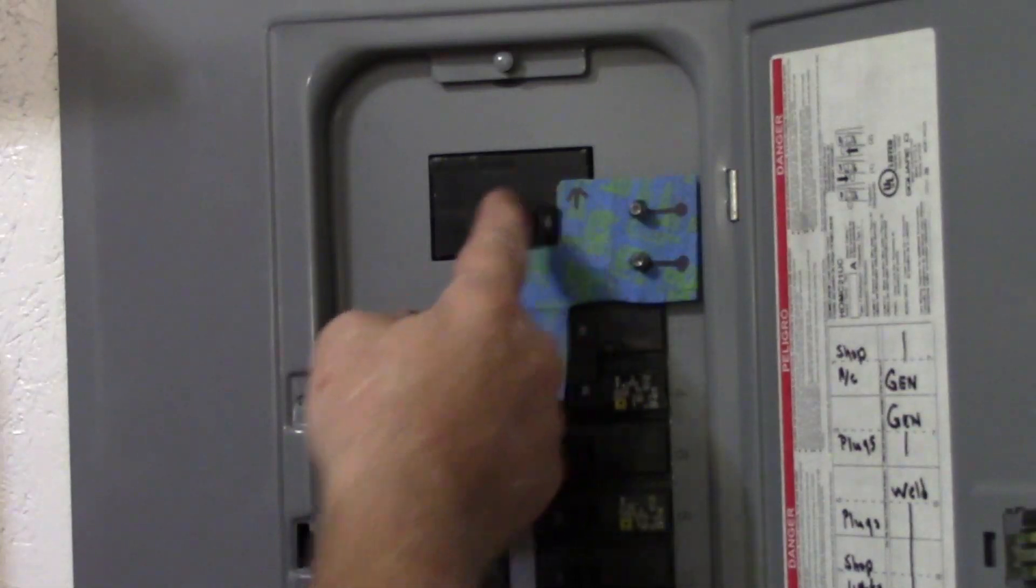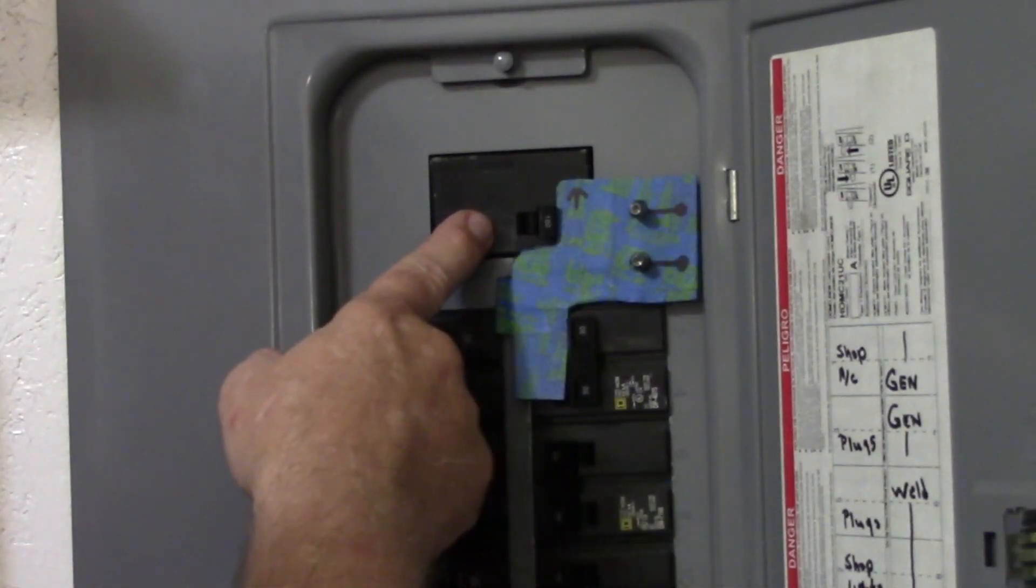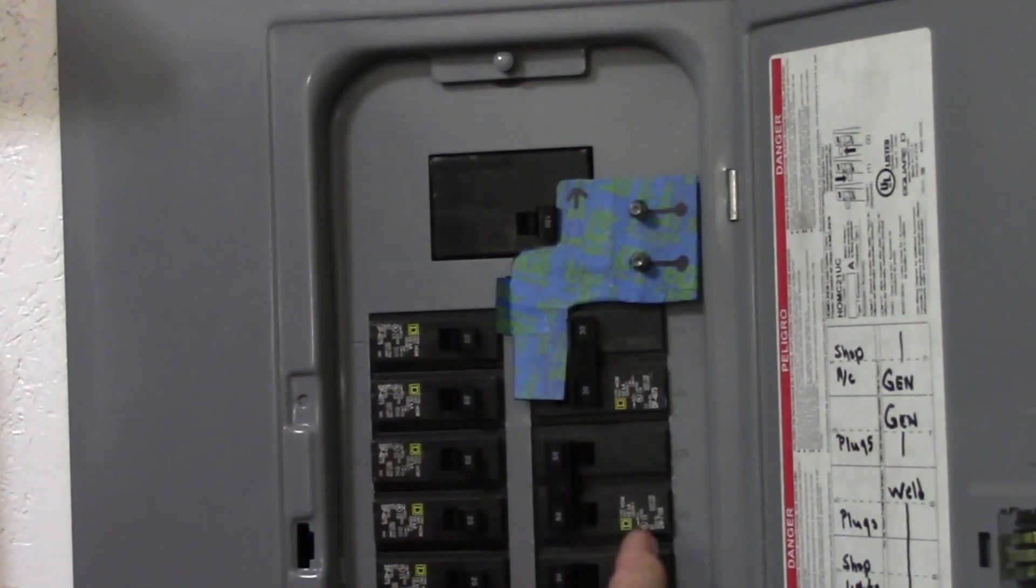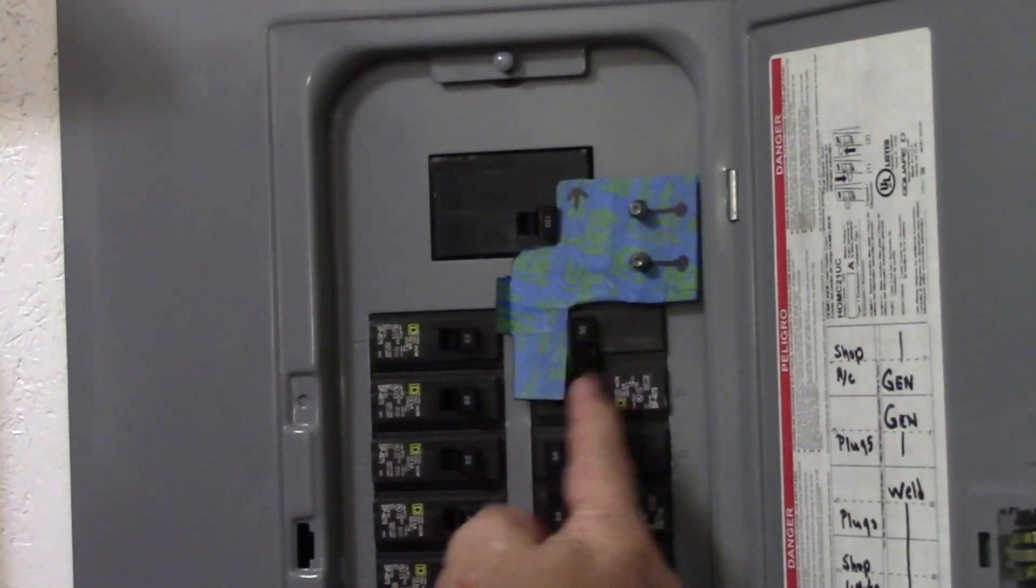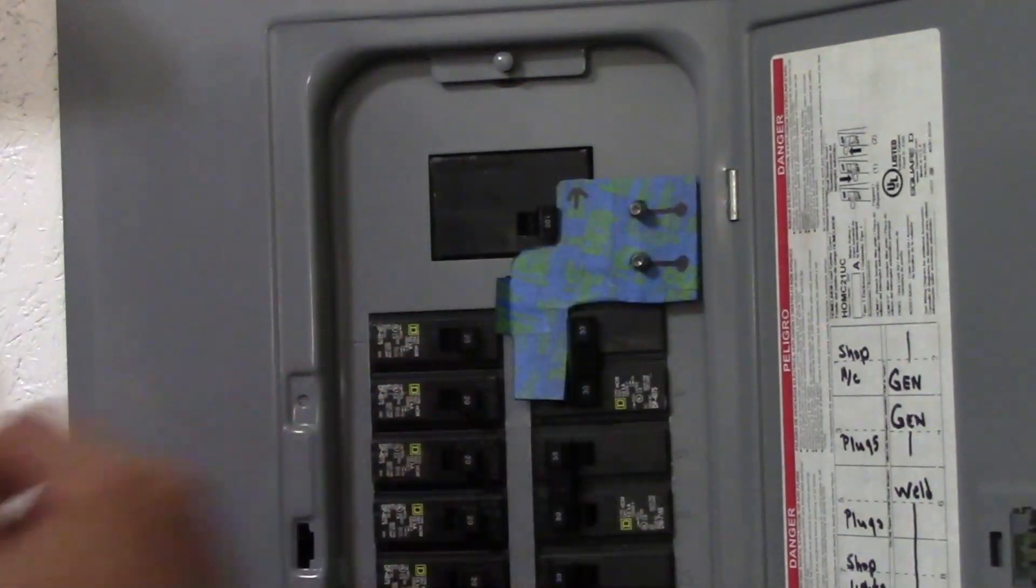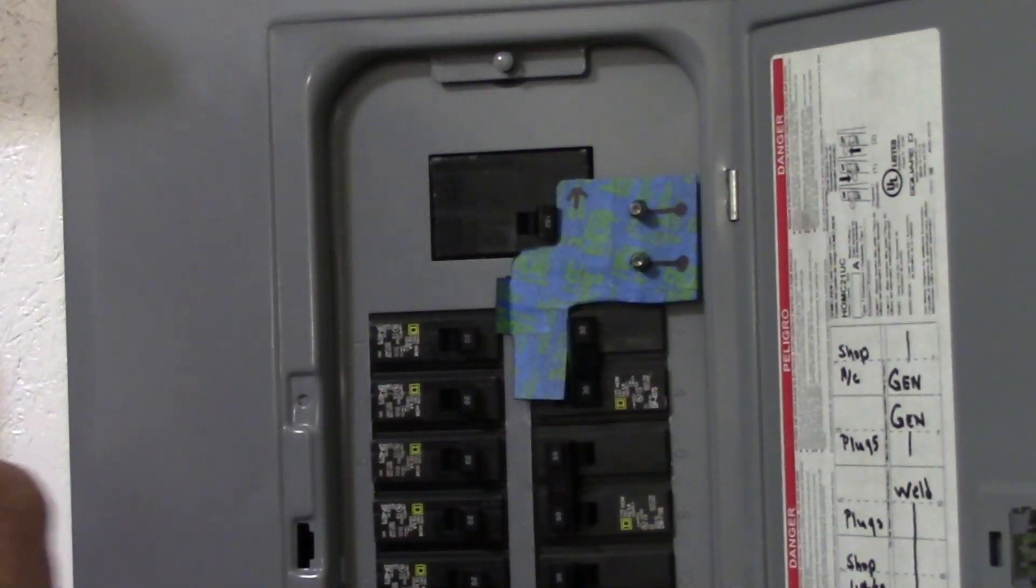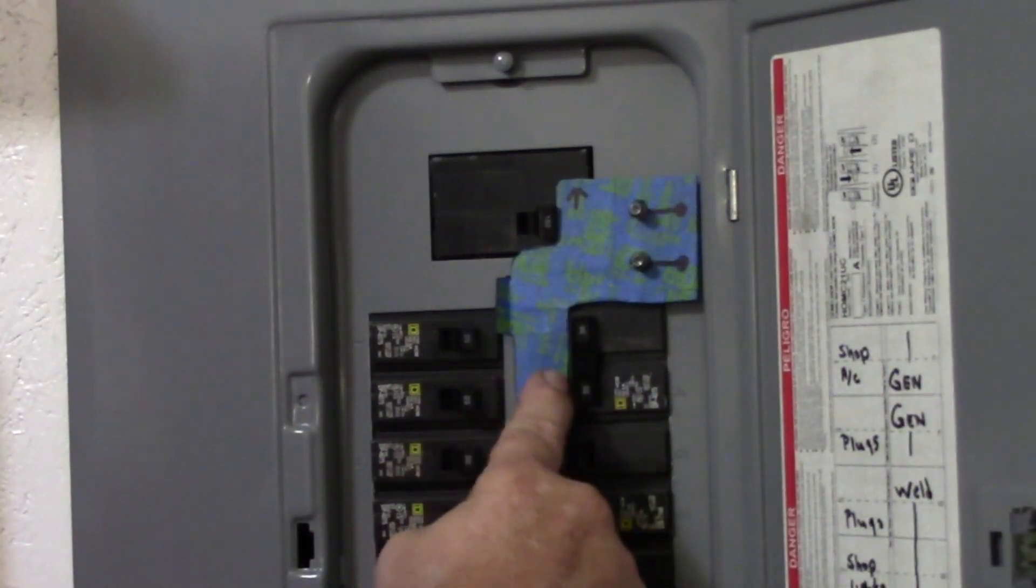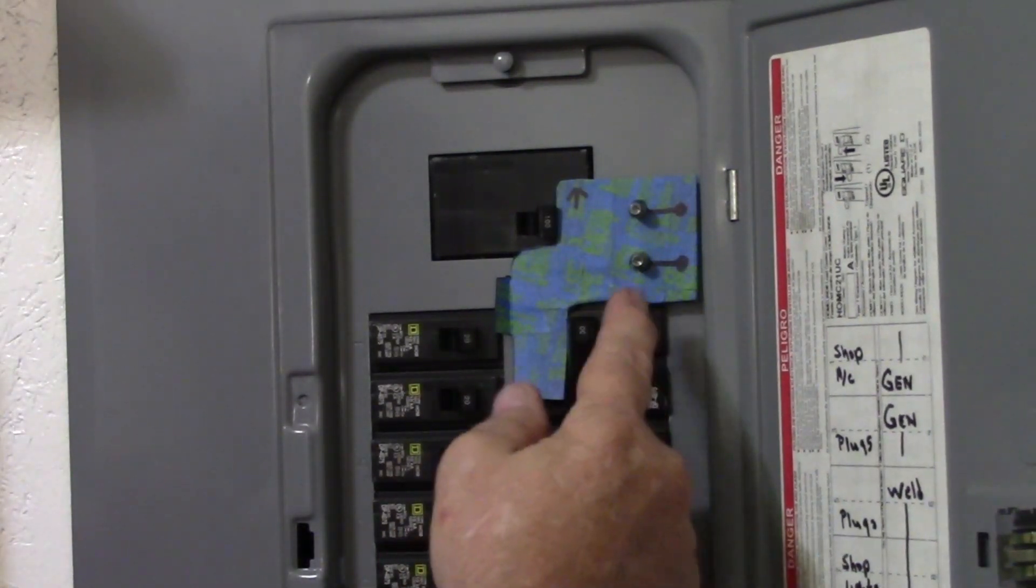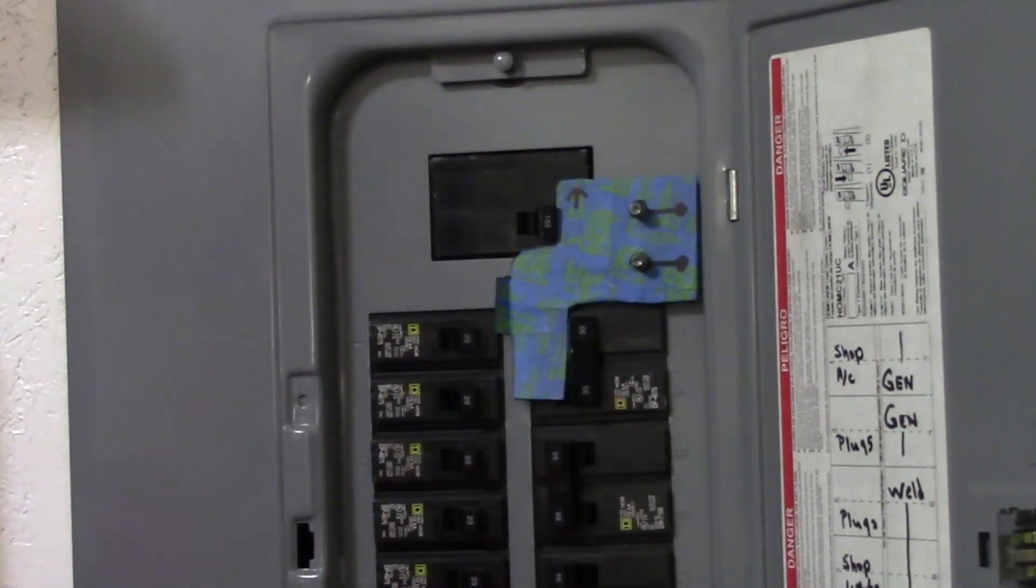So that's why you cut the slots here and you can slide this to the left after you've turned your service line utility breaker off. Because once you've fired up your generator, you don't want to be sending your generated power back up through the utility lines. There might be a lineman out there working on the overhead lines and you could electrocute them.